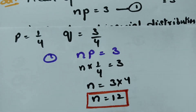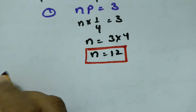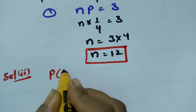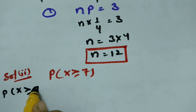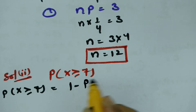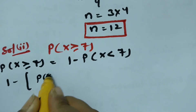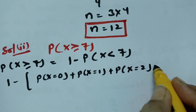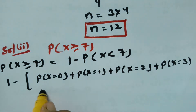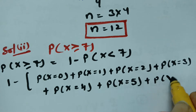The second question is: find the probability of x greater than or equal to 7. Since n equals 12, instead of calculating from 7 to 12, we can use the complement: 1 minus probability of x less than 7. That is 1 minus the sum of P(x=0) + P(x=1) + P(x=2) + P(x=3) + P(x=4) + P(x=5) + P(x=6).